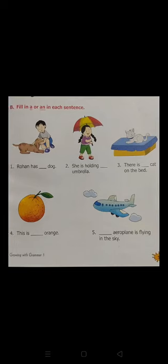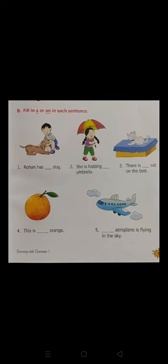Next one is: '___ aeroplane is flying in the sky.' The spelling of 'aeroplane' starts with 'A', and 'A' is a vowel, so we will fill in 'an'. An aeroplane is flying in the sky. Okay, this is all for today, and tomorrow we will solve the next exercise.